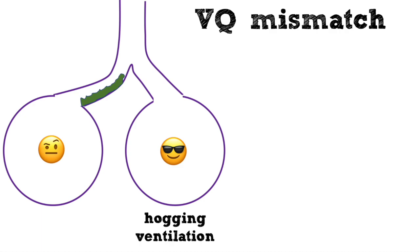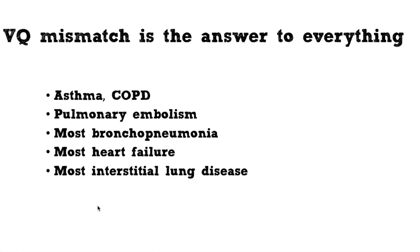Getting back to the mainstream: VQ mismatch basically involves a partial obstruction of flow or partial dysfunction of some alveoli. Some alveoli are hogging all of the ventilation while others are getting inadequately ventilated. The ventilation hogs are wasting ventilation — they're saturating 100% before getting the extra ventilation, while the other alveoli are starved and become hypoxemic. The net effect is that overall blood becomes hypoxemic. VQ mismatch is the answer to everything in pulmonary medicine — if you're ever asked why a patient is hypoxemic, you can guess VQ mismatch and you're generally going to be right.